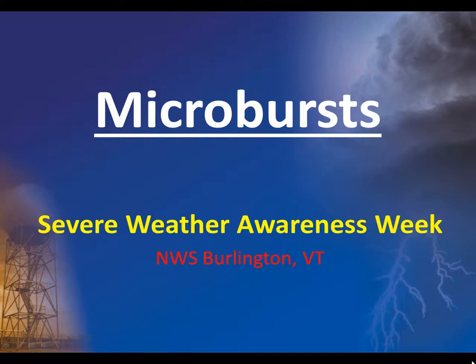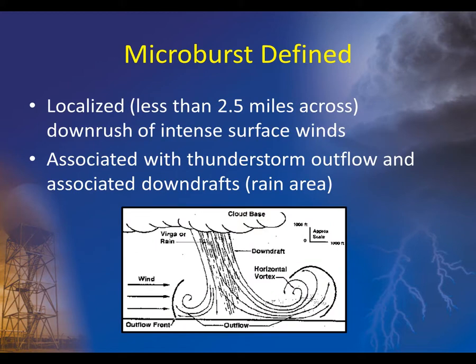Welcome to this discussion on microbursts for National Weather Service Burlington's Severe Weather Awareness Week. A microburst is a small-scale downrush of intense surface winds, roughly 2.5 miles across or less. Microbursts are associated with the downdraft portion of a thunderstorm, or what we call thunderstorm outflow.